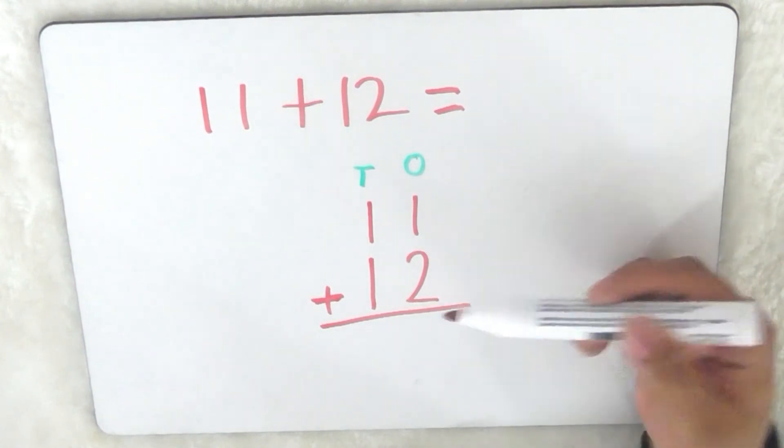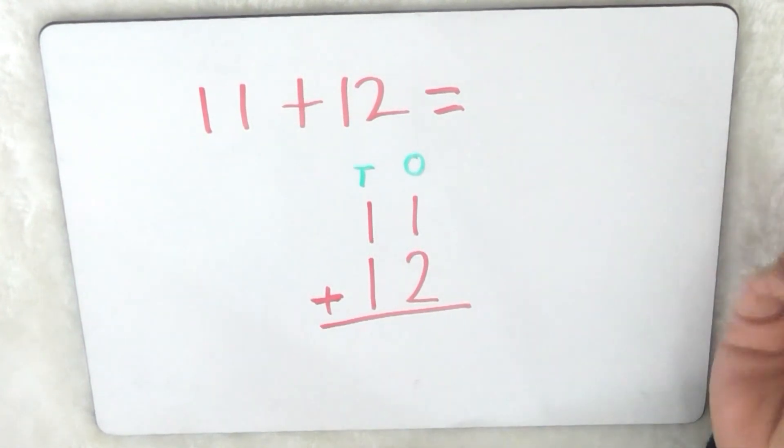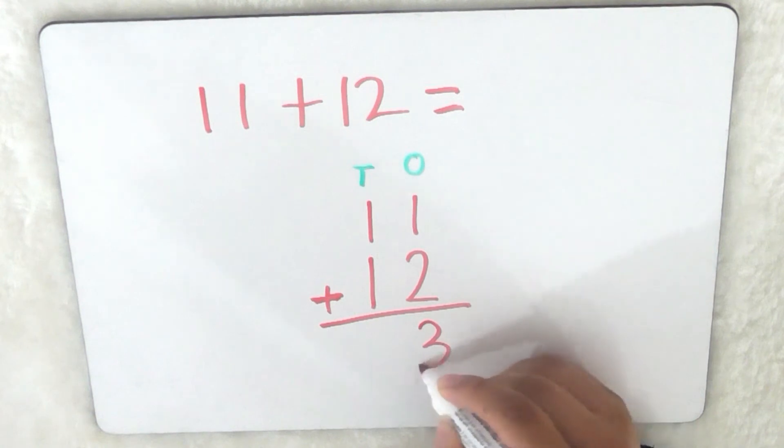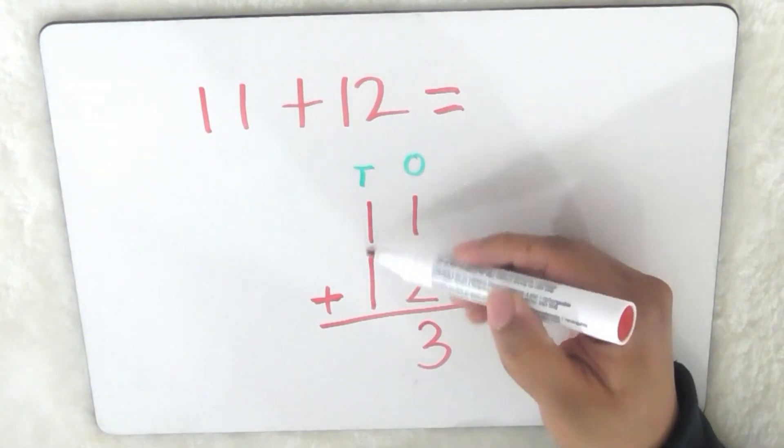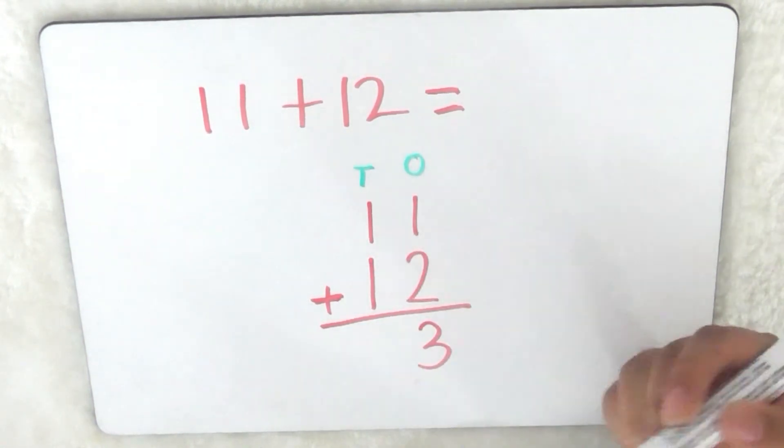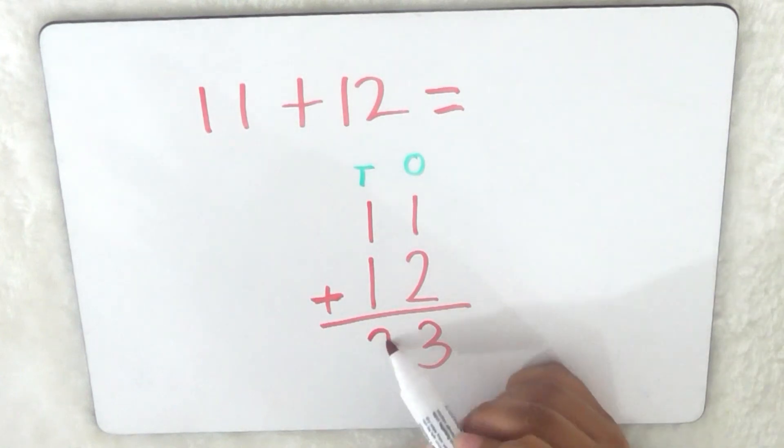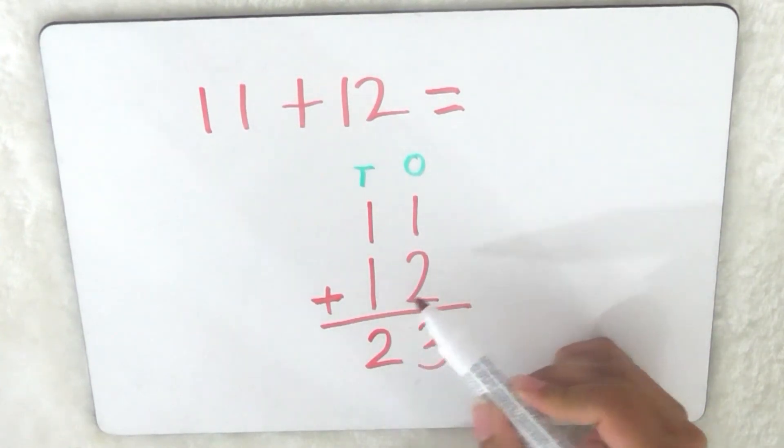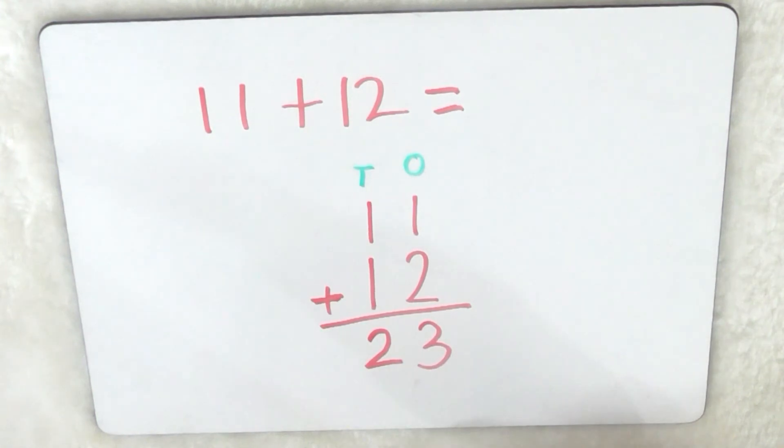So we do 1 add 2, 1 add 2 we know is 3, so we write down 3 and then we do the tens. So 1 add 1 and that's 2. So that means 11 add 12 equals 23.